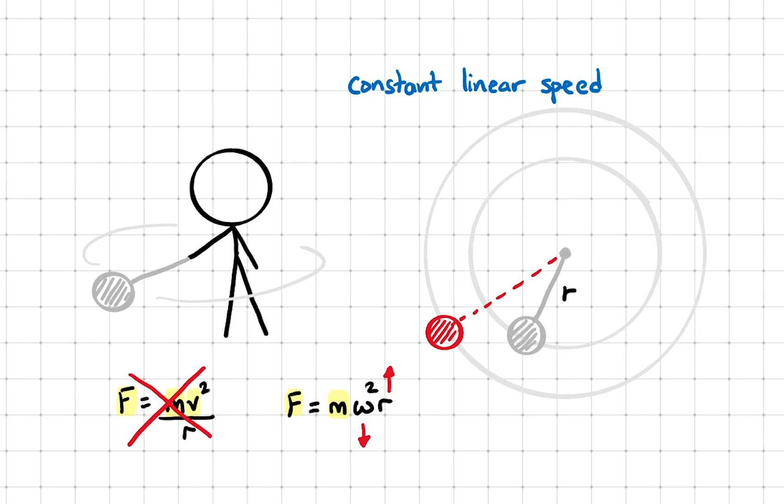Again, this makes physical sense. From these two thought experiments, we have learned that we have to consider which are constants and which are variables before choosing the correct centripetal force equation to use.